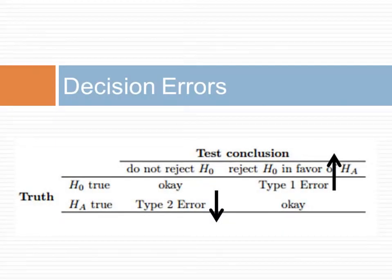If we reduce one type of error, we generally increase another type of error. If we always reject the null hypothesis regardless of the data, then type 1 error will be at its maximum and type 2 errors at its minimum. The two types of errors are related.